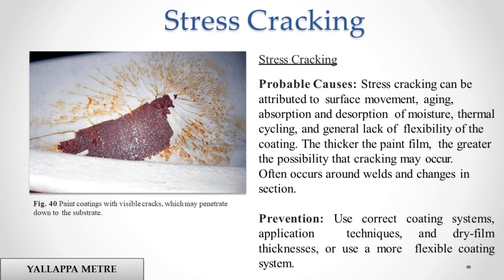Stress Cracking. Probable causes: stress cracking can be attributed to surface movement, aging, absorption and desorption of moisture, thermal cycling, and general lack of flexibility of the coating. The thicker the paint film, the greater the possibility that cracking may occur. Often occurs around welds and changes in section. Prevention: use correct coating systems, application techniques, and dry film thicknesses, or use a more flexible coating system.